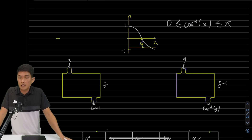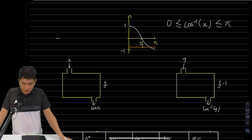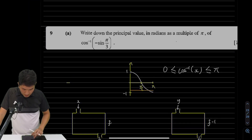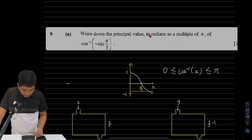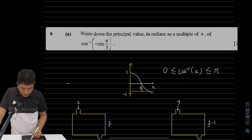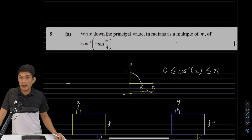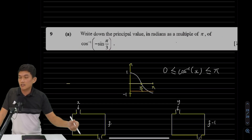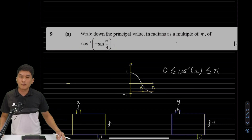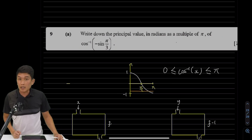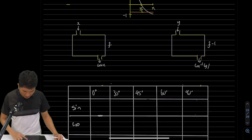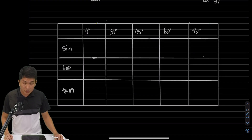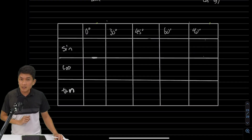Now let's look at the question: write down the principal value in radians of cosine inverse of negative sine of π/3. The first thing I need to evaluate is what's inside the bracket — what is negative sine of π/3 — and that tests you on special ratios.